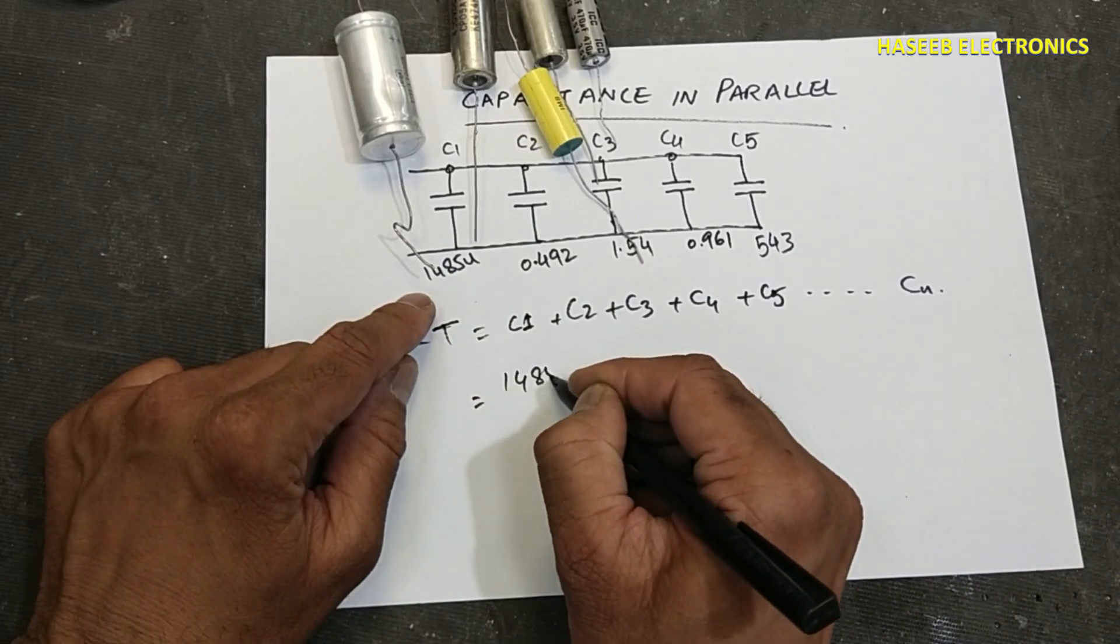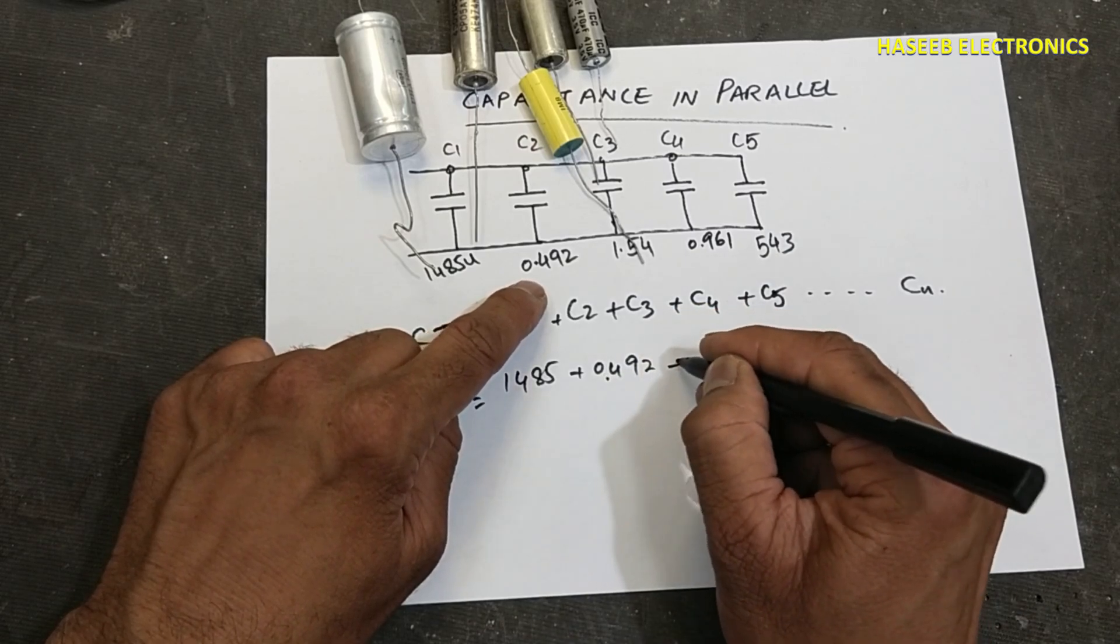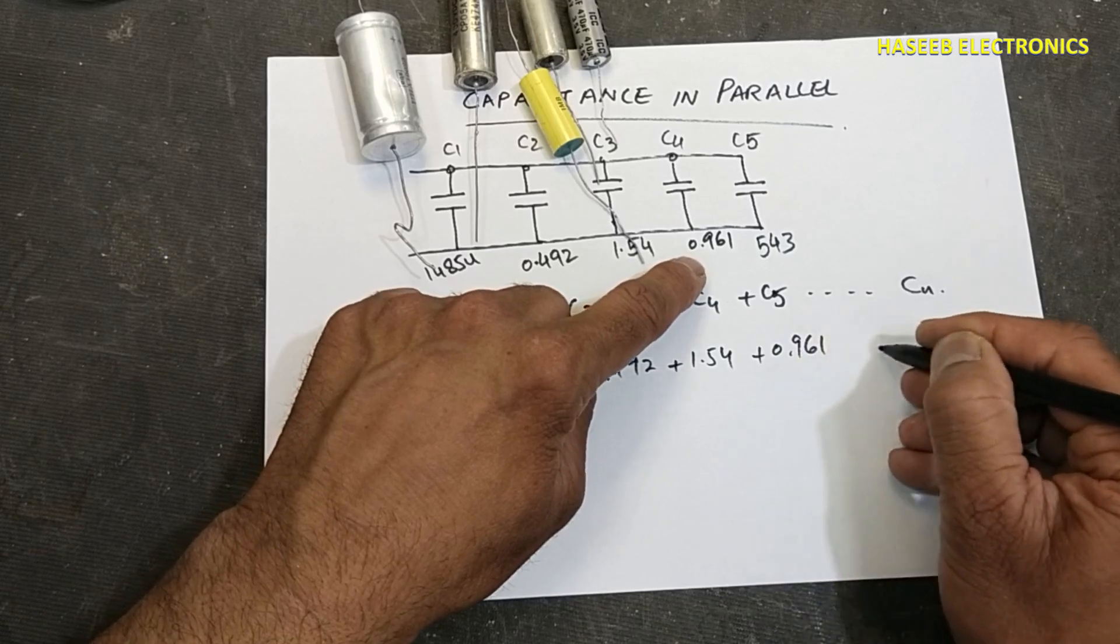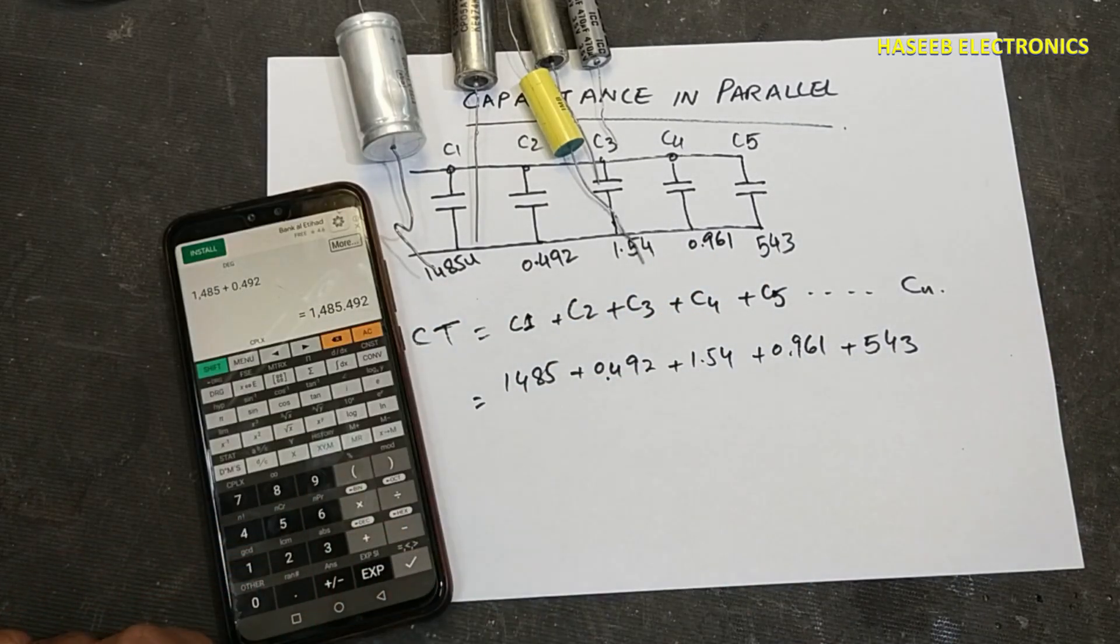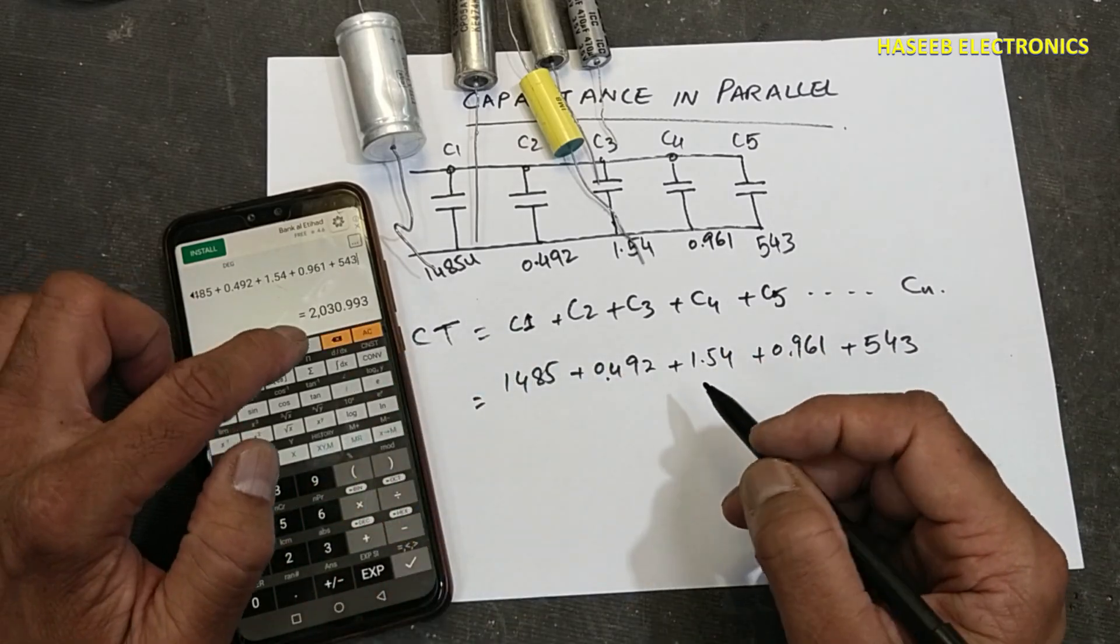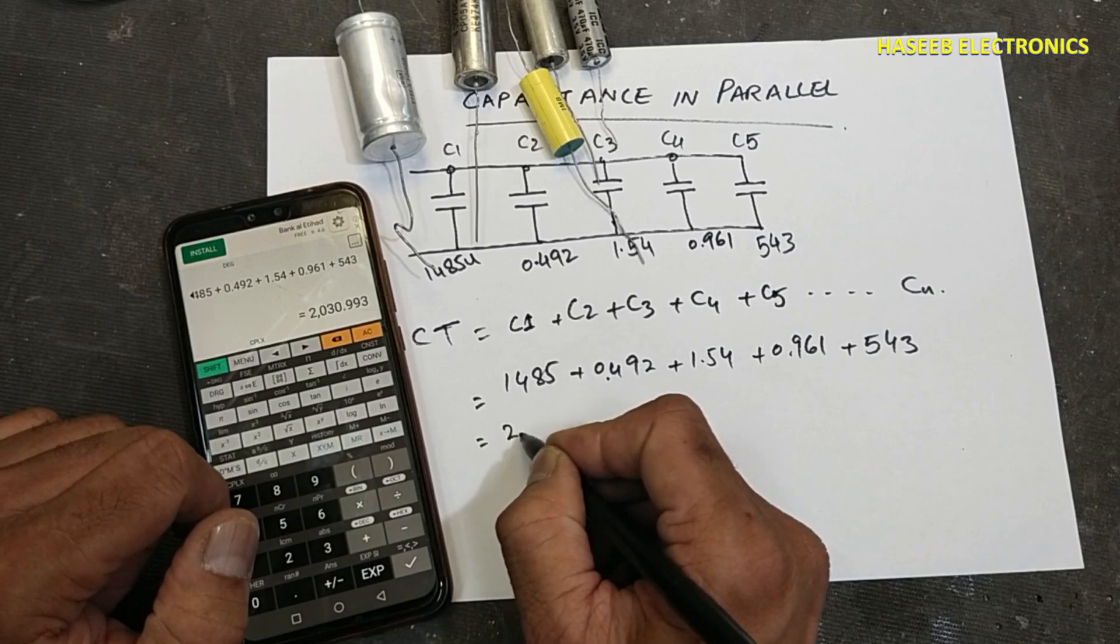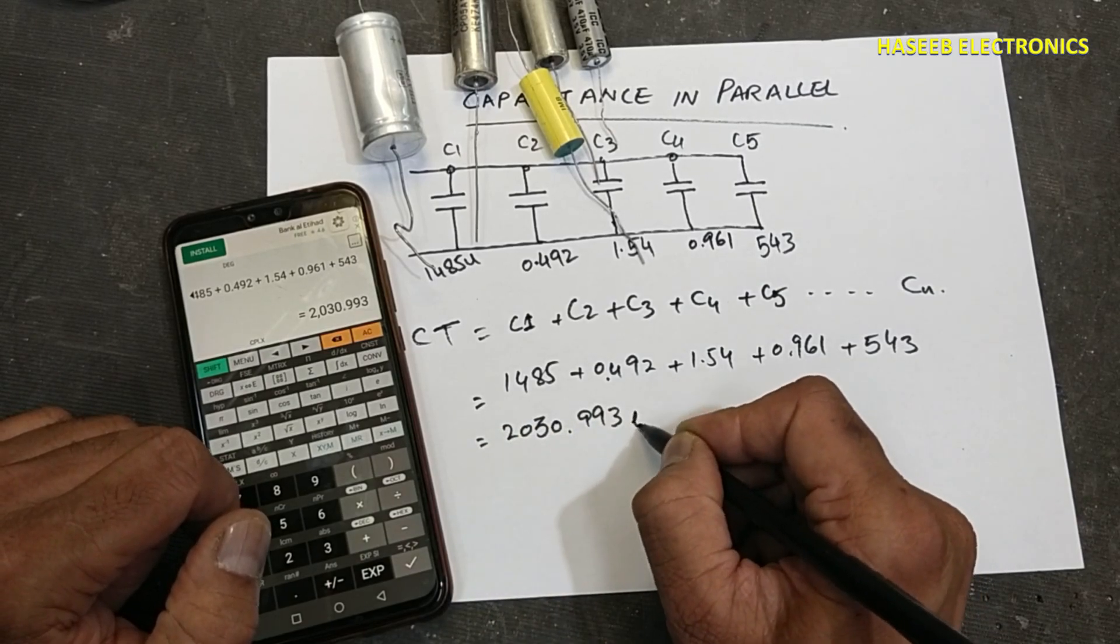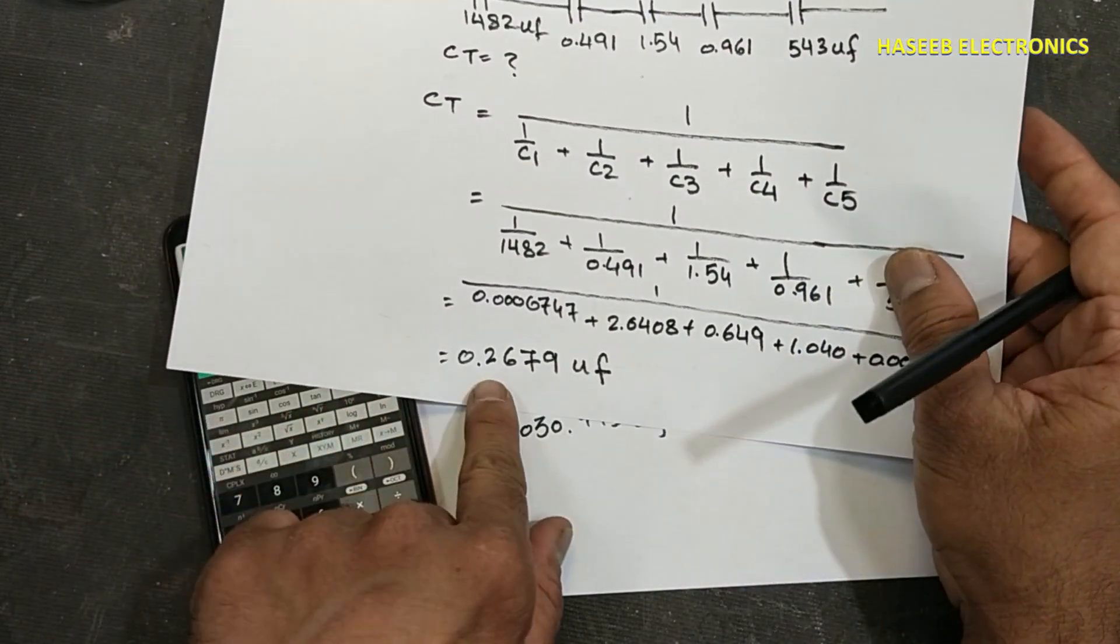1485 plus 0.492 plus 1.54 plus 0.961 plus 543. It is 2030.993 microfarad.